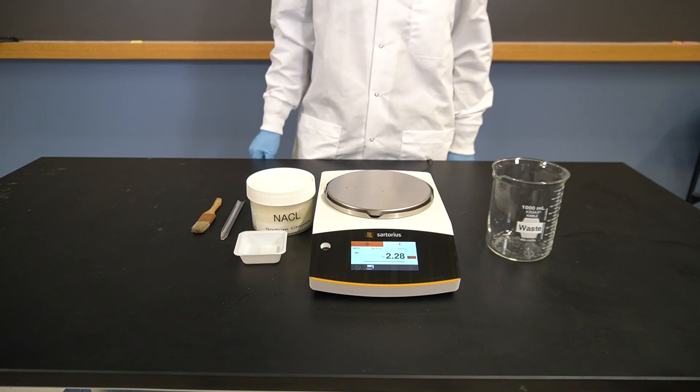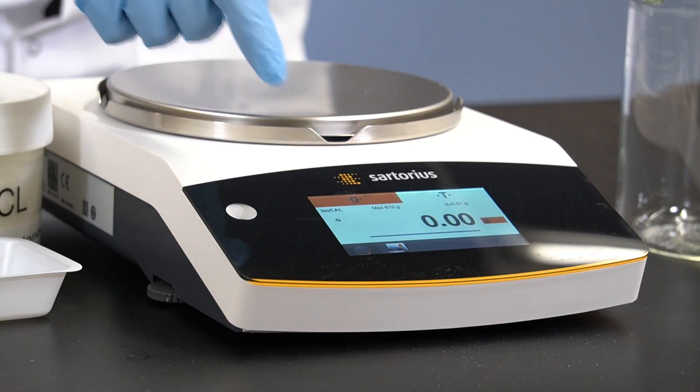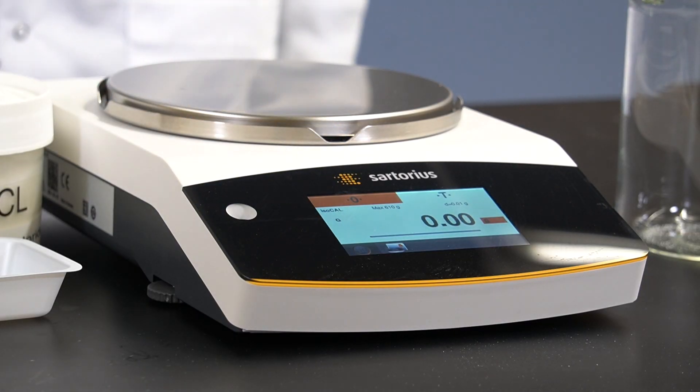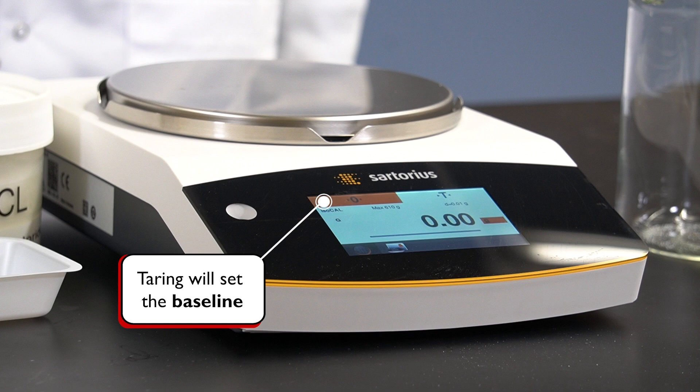We should then tare the balance by pressing the tare button. The balance should read zero after taring, as the balance pan is empty at this point. The process of taring is essentially to set the baseline for the mass measurement.